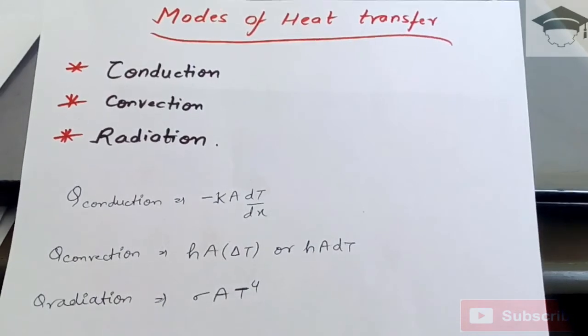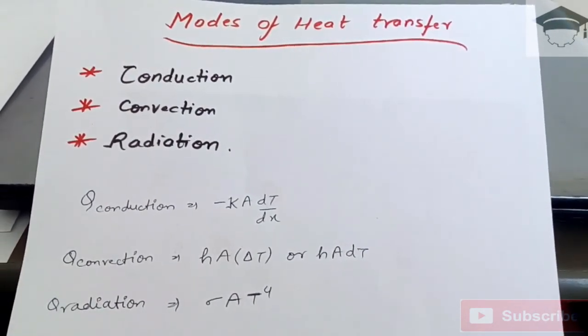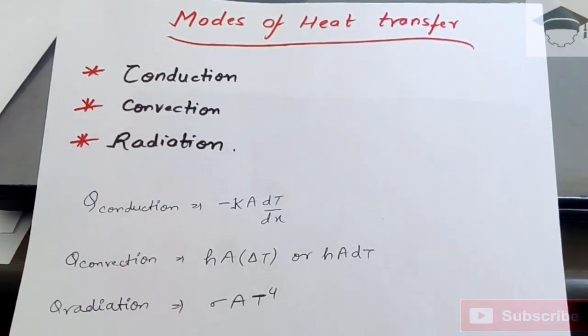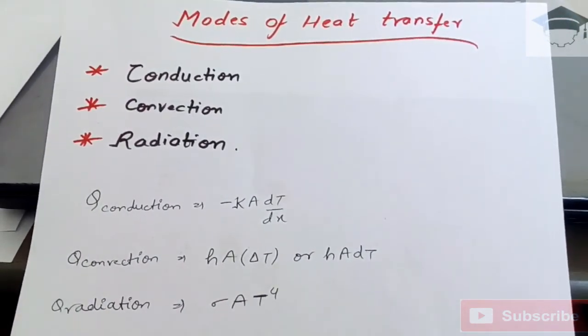And because of the temperature, radiation occurs because of the high temperature. Conduction and convection they occur even at low temperatures, but radiation occurs at higher temperatures. It is more dominant at higher temperatures.